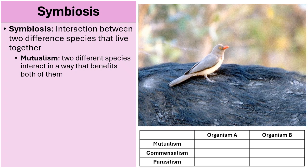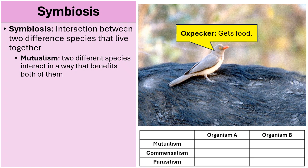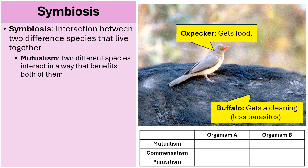Another example of mutualism is what you see in the picture between an oxpecker bird and a buffalo. They both benefit from a close living arrangement where the oxpecker feeds on parasites that may be within the fur of the buffalo. The bird receives food and the buffalo gets a cleaning. There are all kinds of examples of cleaner animals, but this is a fun visual example.